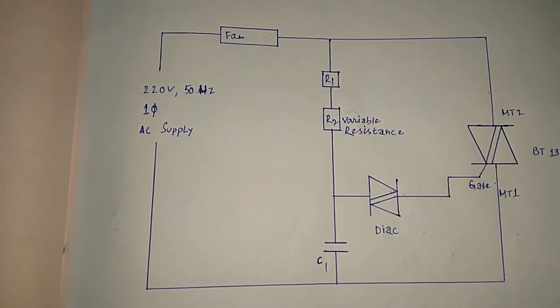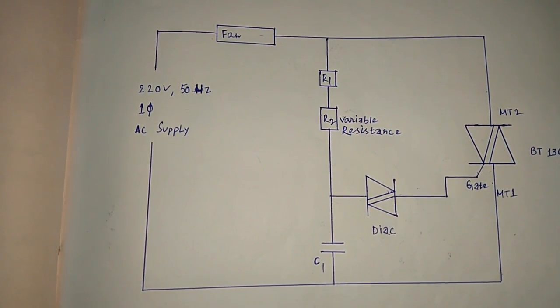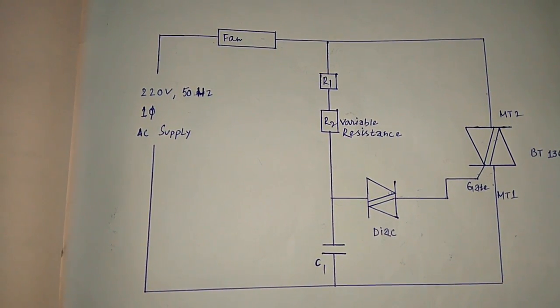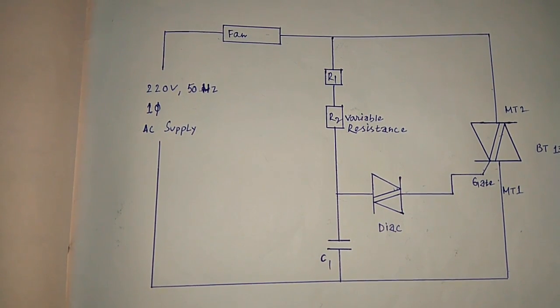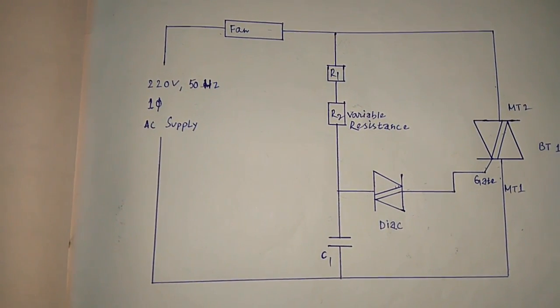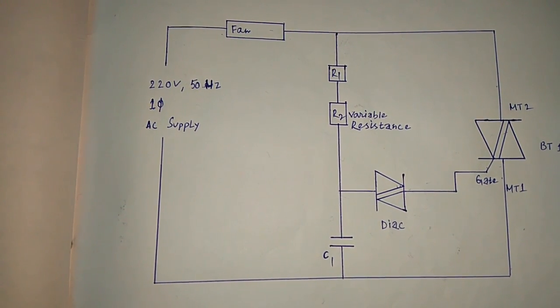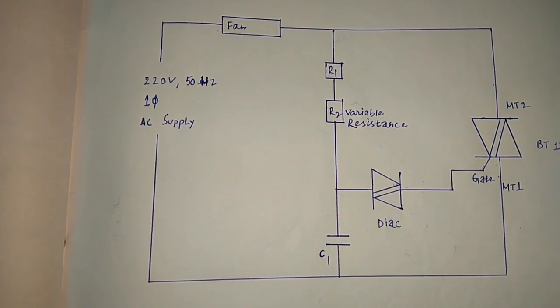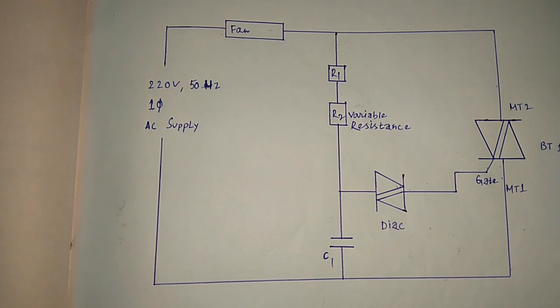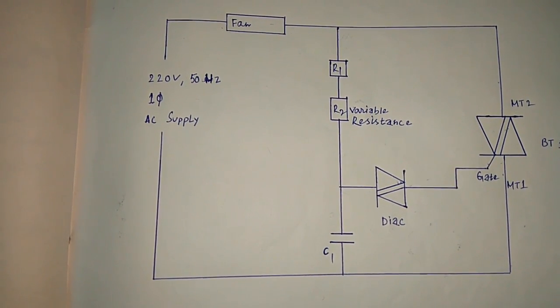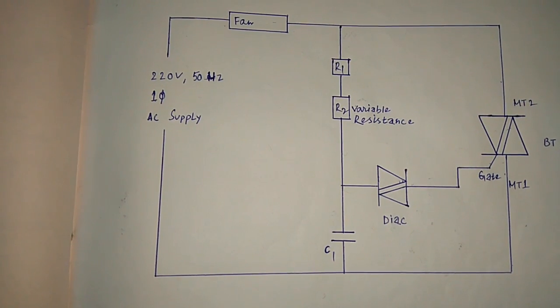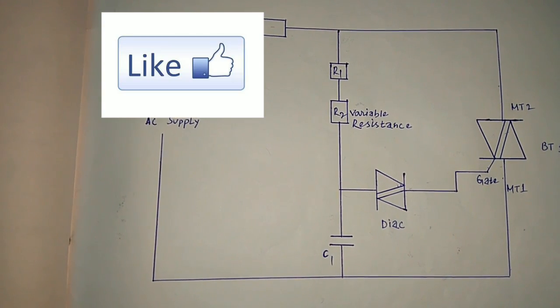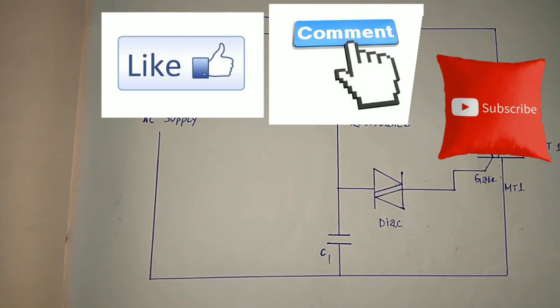This working principle actually works in a modern electronic regulator. We have a previous video on fan regulator that was basically based on resistance changing. This regulator has some plus points: it has power saving property, reduced energy losses, stepless control of fan speed, and is also very cost effective compared to the resistance controlled one.